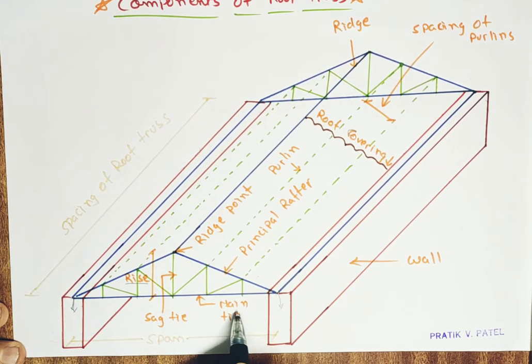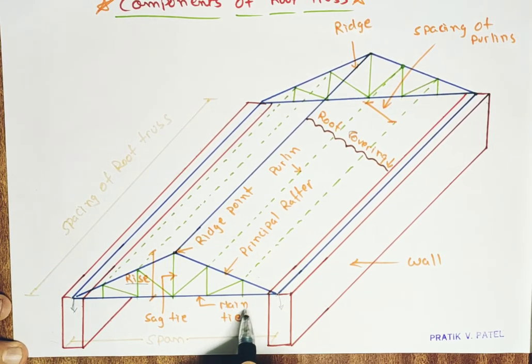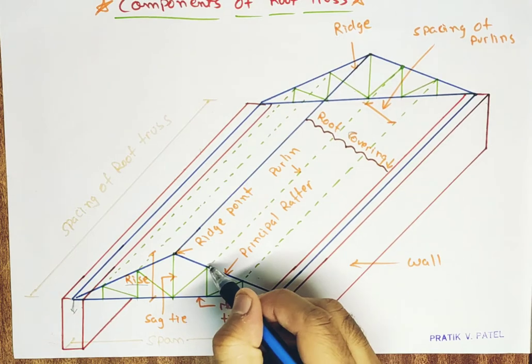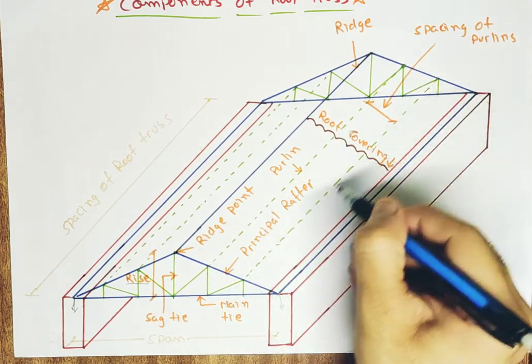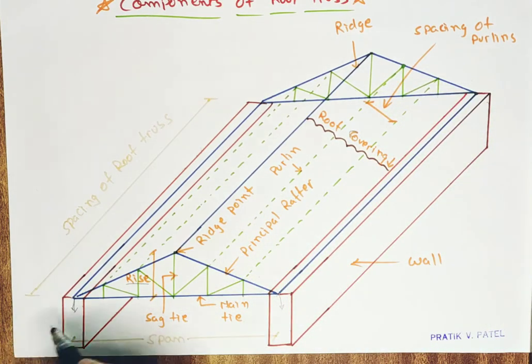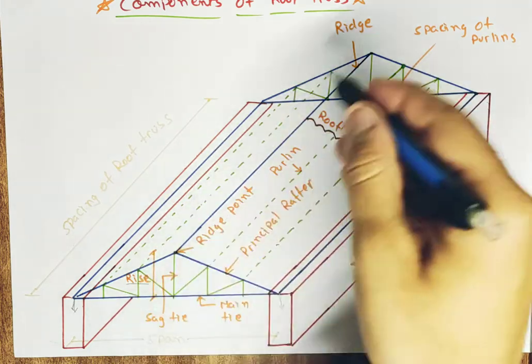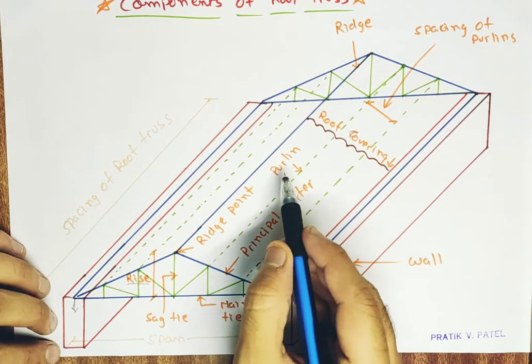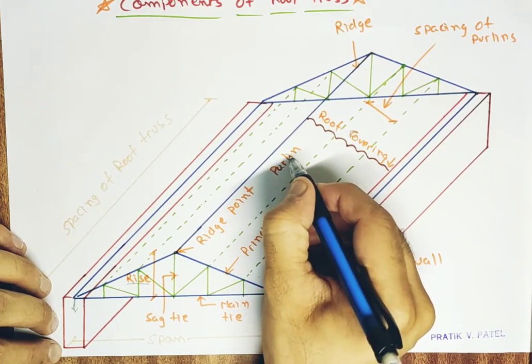Then this base will become main tie, M-A-I-N main tie, and then comes this dotted lines which resembles the continuation of this truss over the entire span which is known as purlin, P-U-R-L-I-N purlin.